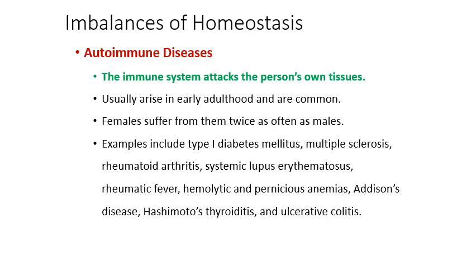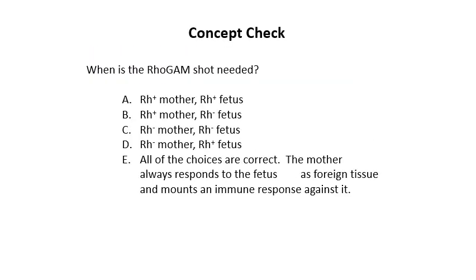Autoimmune diseases are really common because the immune system is really complex — and when things are complex, it's easy for stuff to go wrong. Concept check: RhoGAM is needed only when an Rh negative mother is pregnant with an Rh positive fetus. Everything else will be fine.